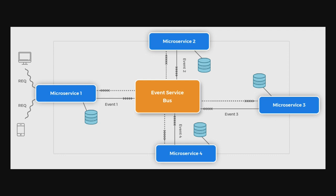Event-driven architecture is introduced whenever we need asynchronous behavior in the application. Asynchronous means you trigger an event and it's fire-and-forget, not request-and-reply. Request-and-reply means you send a request and immediately need a reply. With fire-and-forget, you send an event to the event service bus, and the other microservices listening to that bus will process that event and make a change in state.